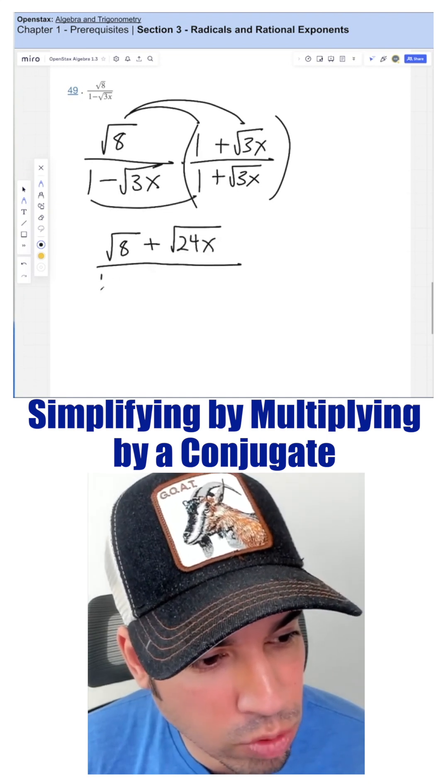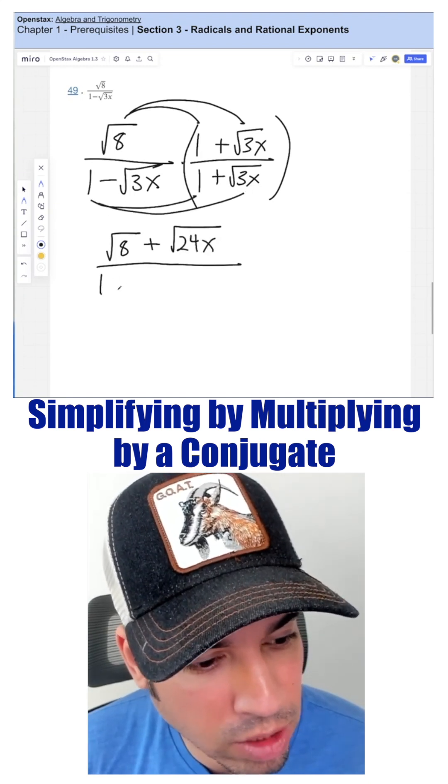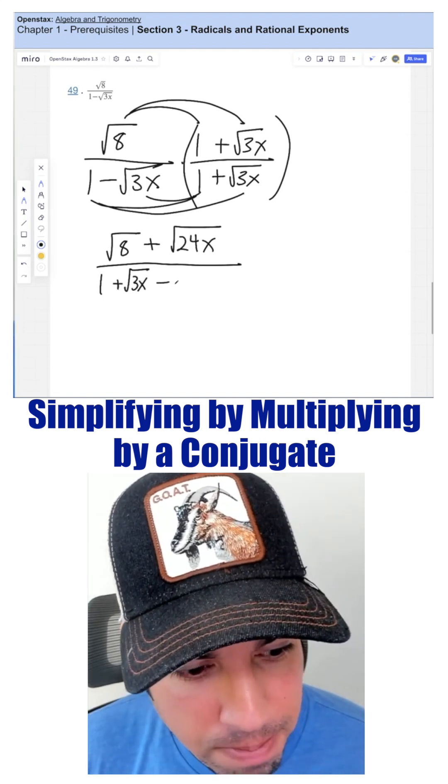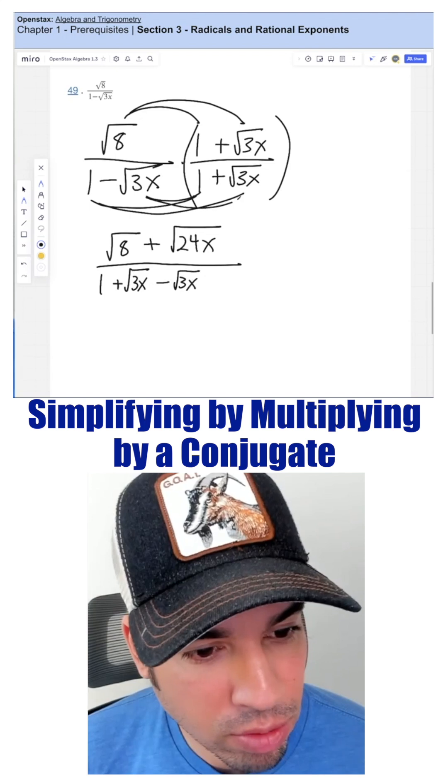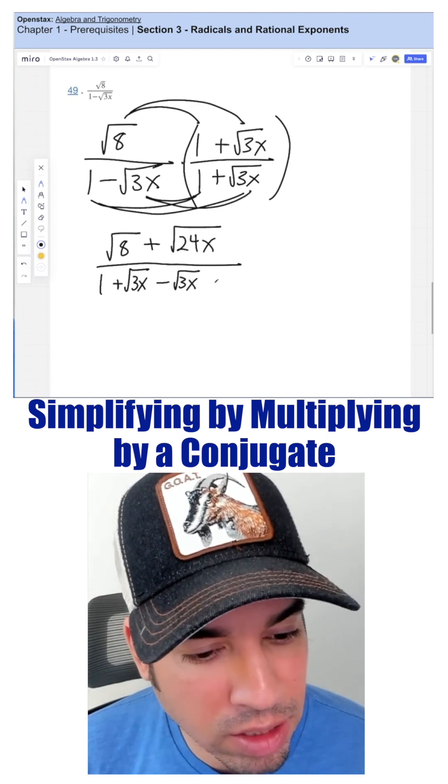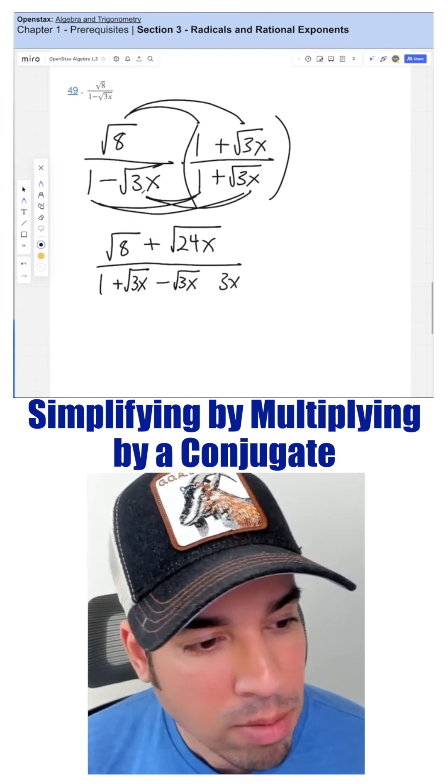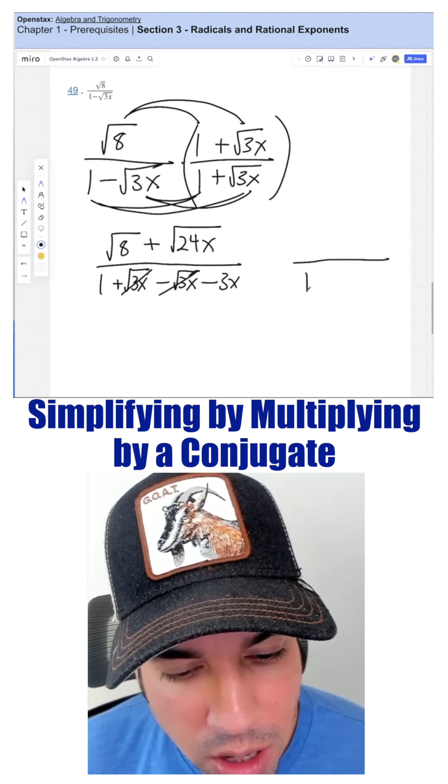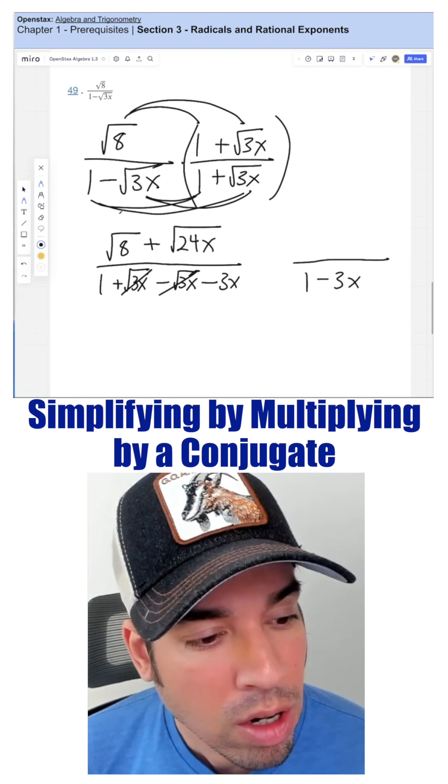So 1 times 1, which is 1, 1 times rad 3x, which is rad 3x, then negative rad 3x times 1, which is minus rad 3x, and then negative rad 3x times positive rad 3x is just going to be 3x, but since it's a negative and a positive, it's going to be negative. We're left with 1 minus 3x.